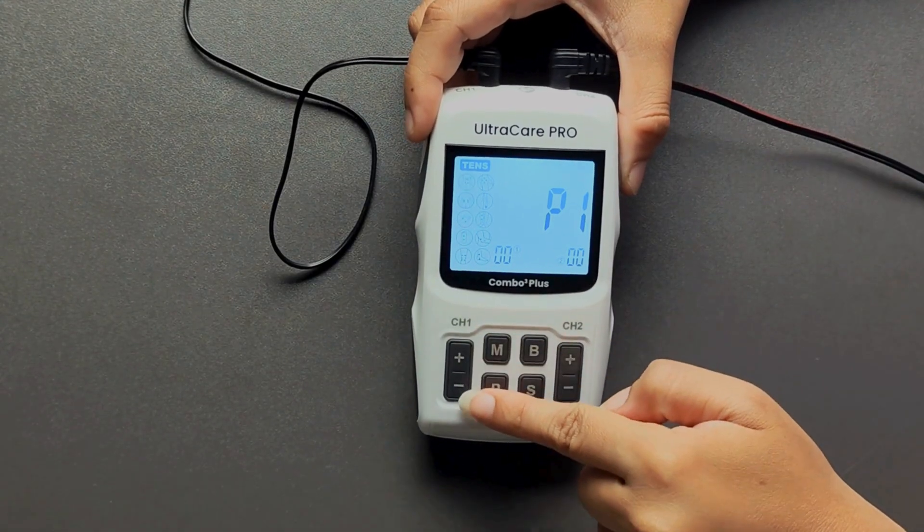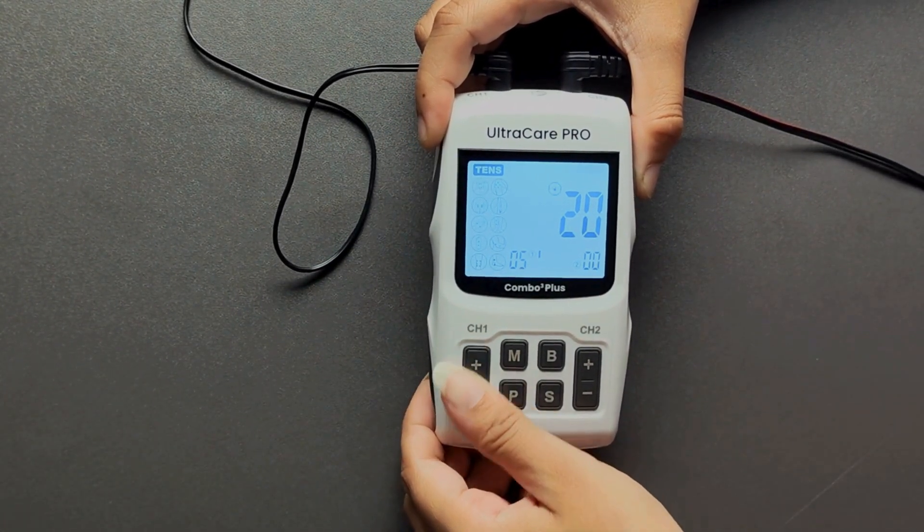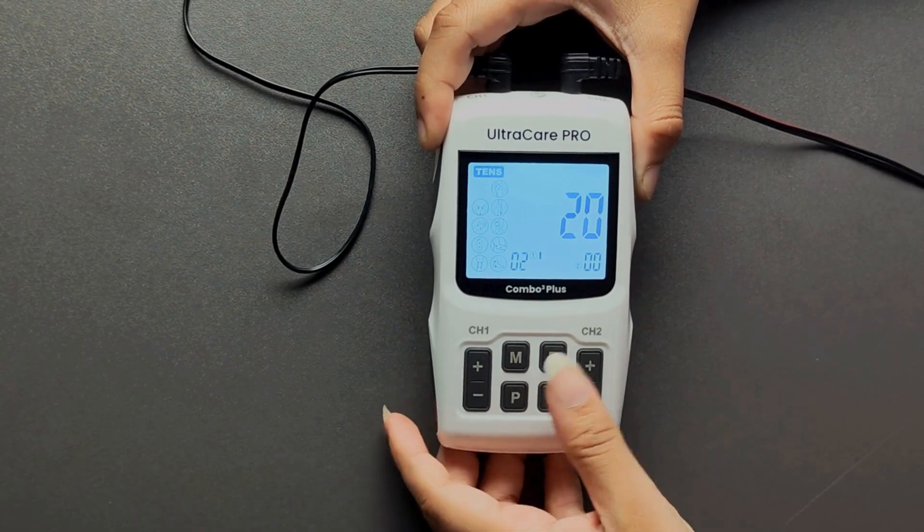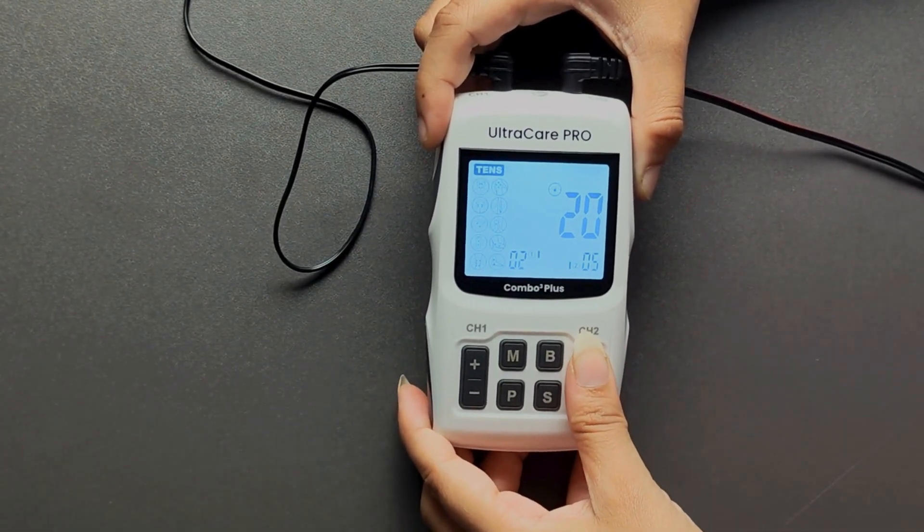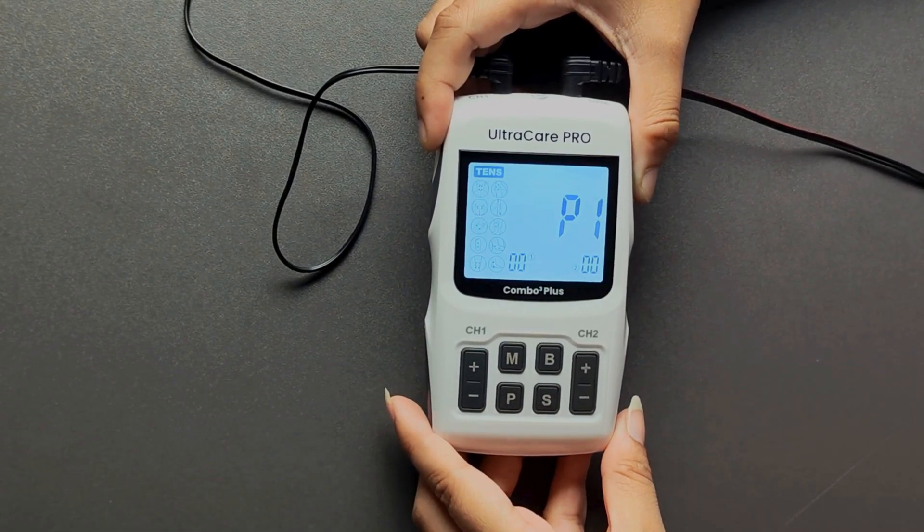During the treatment, you can adjust the intensity for channels 1 and 2 using plus and minus buttons. The intensity can be set between 00 to 90 for TENS, EMS, and Russian current therapy and between 00 to 60 for IFT mode.